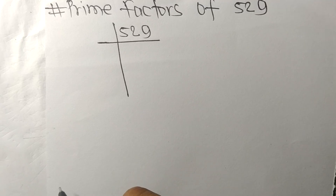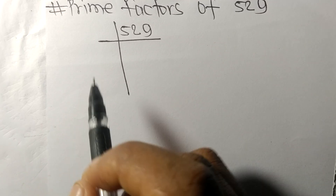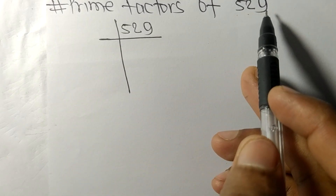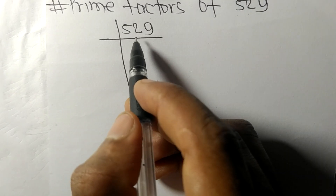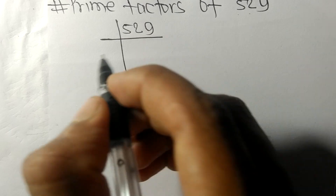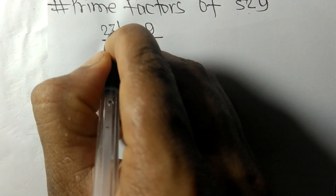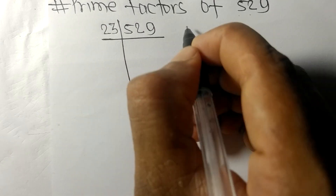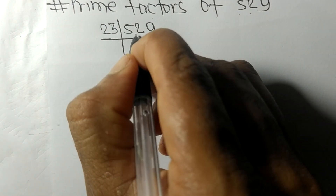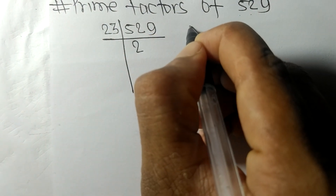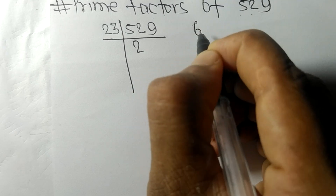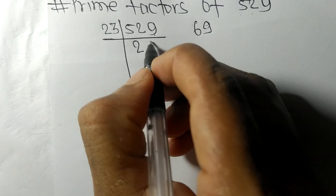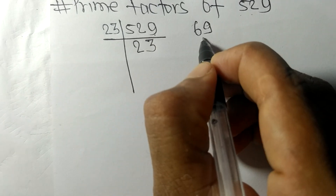Today we shall learn to find the prime factors of 529. 529 is exactly divisible by 23. So 23 times 2 is 46, and 23 times 3 is 69, giving us a remainder of 69.